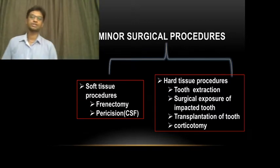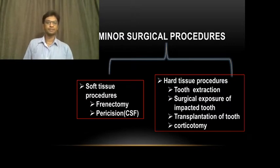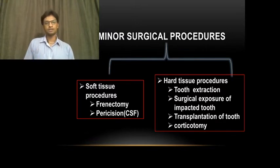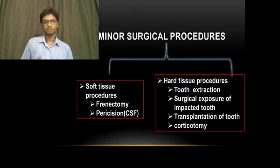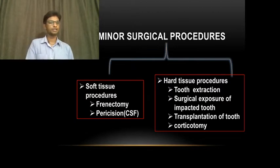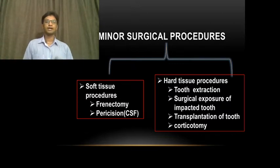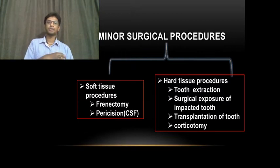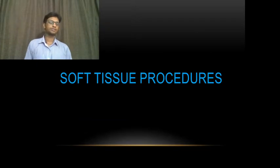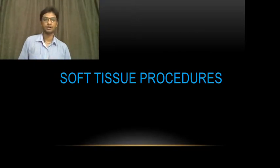The soft tissue procedures include frenectomy and pericision, while the hard tissue procedures include tooth extraction, surgical exposure of the impacted tooth, transplantation of a tooth, and corticotomy. Let us first see what all the soft tissue procedures are in detail.